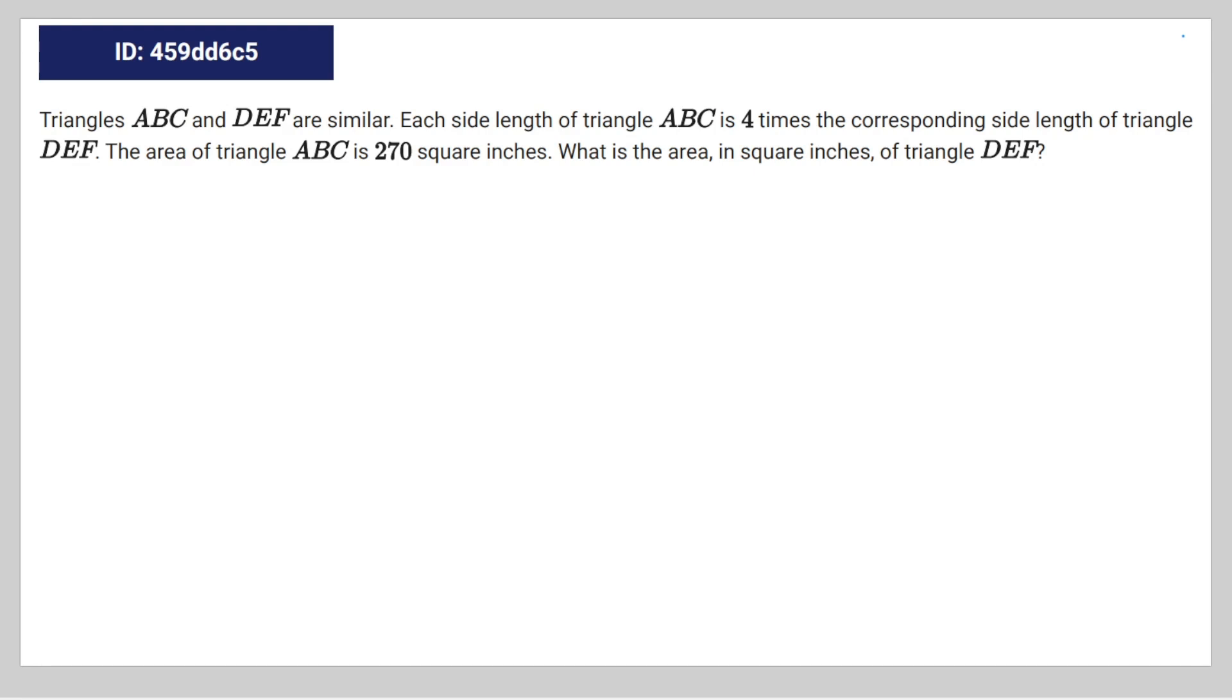You're presented with the following geometry trick question. Triangle ABC and DEF are similar. Each side length of triangle ABC is 4 times the corresponding side length of triangle DEF. The area of triangle ABC is 270 square inches. What is the area in square inches of triangle DEF?